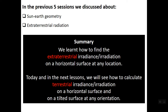By extraterrestrial we mean the radiation outside the atmosphere, neglecting the atmospheric effect. Irradiance refers to radiation power with units of watts per square meter, while irradiation is energy with units of joules per square meter. Today and in the next lessons we will see how to calculate terrestrial radiation — considering the effect of the atmosphere — on a horizontal surface, and in lesson 8 we will learn how to find radiation on a tilted surface at any orientation and slope.